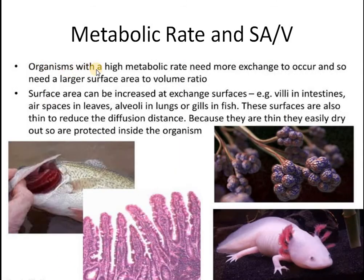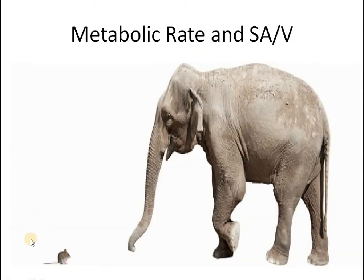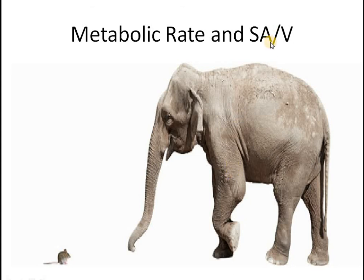Organisms with a high metabolic rate need more exchange to occur and so need a large surface area to volume ratio. This small animal has a high metabolic rate, so it would require more oxygen, more nutrients, and would need to expel more waste material — more carbon dioxide and urea. Its surface area to volume ratio should be higher compared to the large animal where the metabolic rate is lower, the heart rate is lower, and all the biochemical reactions happening in its body are comparatively less.